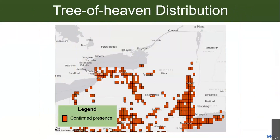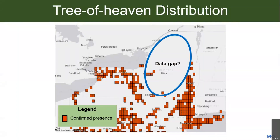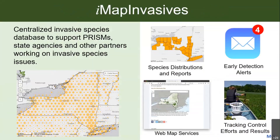Here's an example of what that can look like — this is for Tree of Heaven, an invasive species that hosts the dangerous spotted lanternfly. These orange blocks show places where Tree of Heaven has been recorded, and you'll see there are a lot of blank spots. The question is: is Tree of Heaven really not there, or have we just not surveyed for it? IMAP Invasives has been tasked to fill these needs.